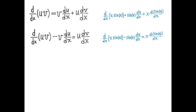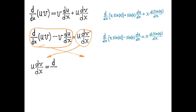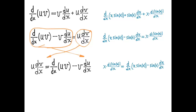Moving some terms around — this is just algebra — I end up with u times dv/dx equals d/dx of uv minus v times du/dx. Here's the specific example you can study if you're having trouble following the abstract discussion.